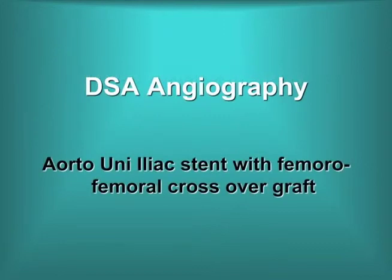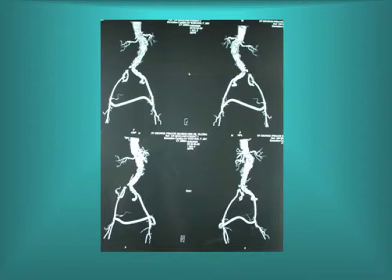Some stents can be used which are aorto-uni-iliac, combined with femoro-femoral crossover grafts and occlusion of the contralateral side. This allows placement of a single graft but requires a femoro-femoral crossover graft to reperfuse the contralateral limb. Here we see CT reconstructions of just such a procedure.